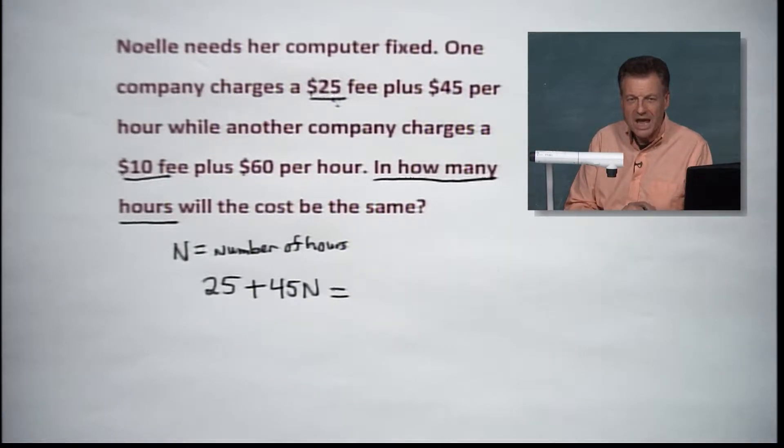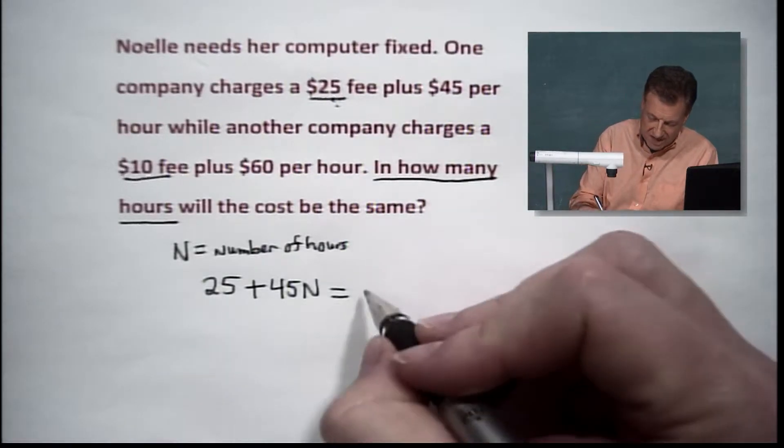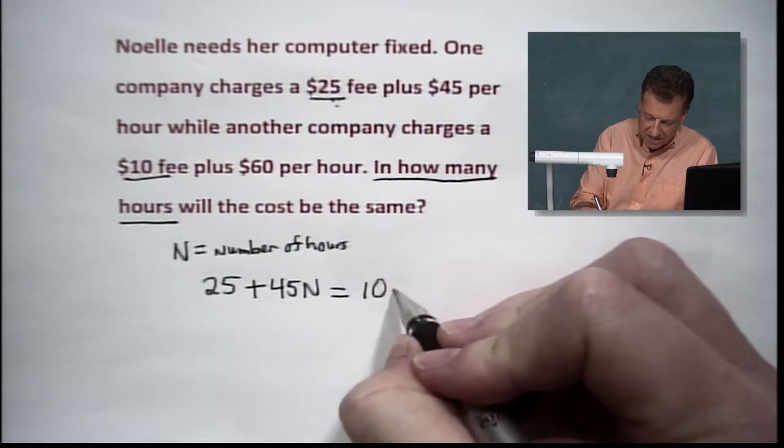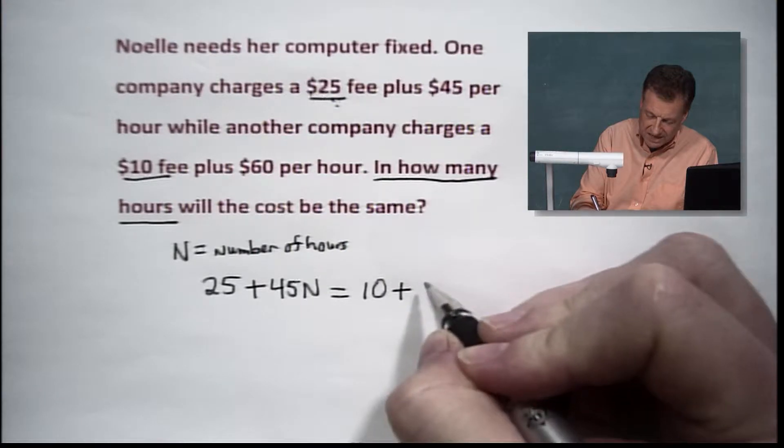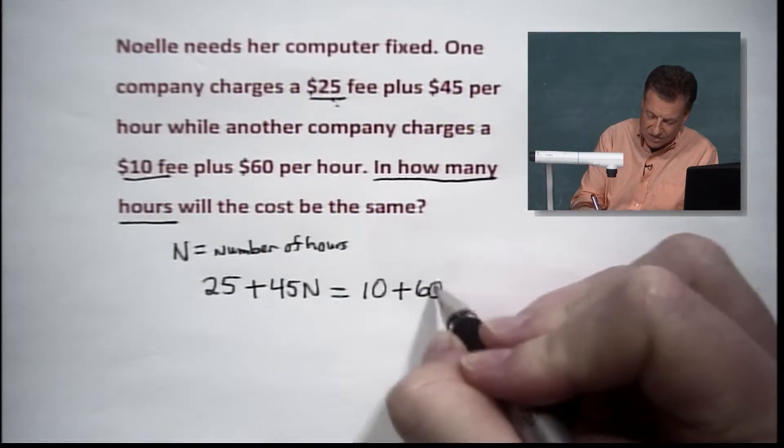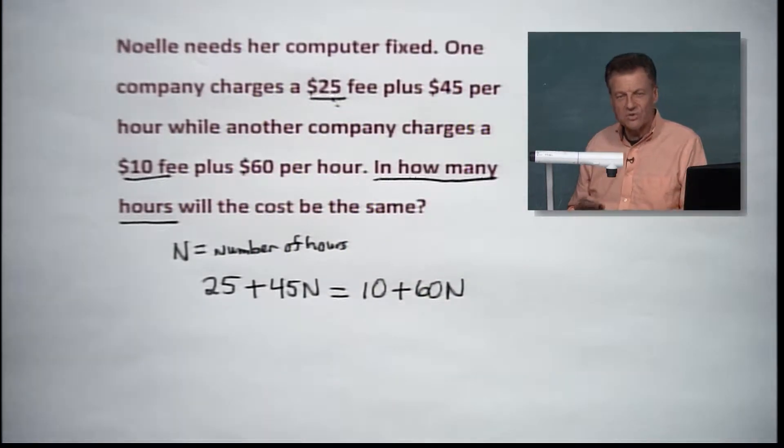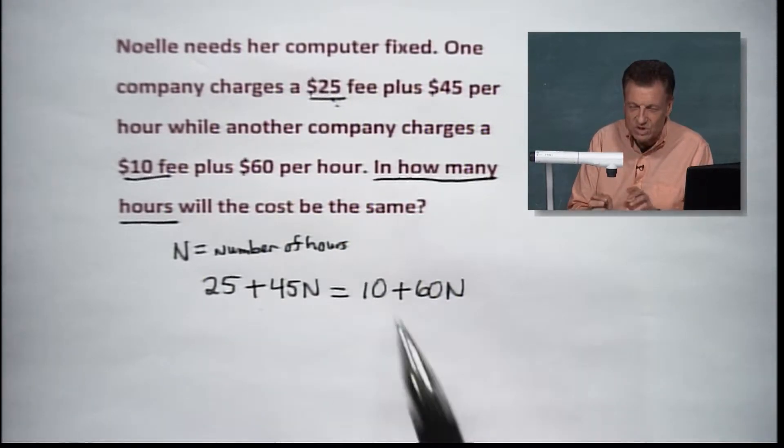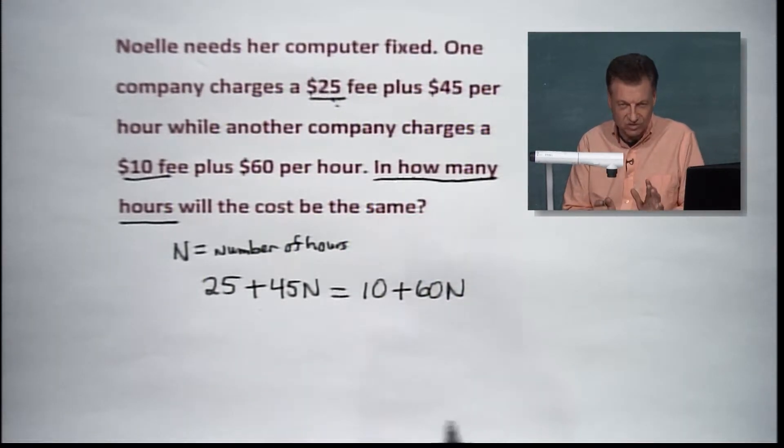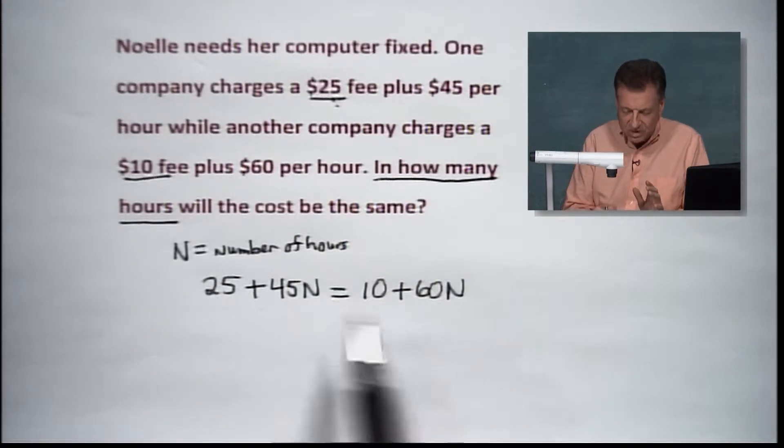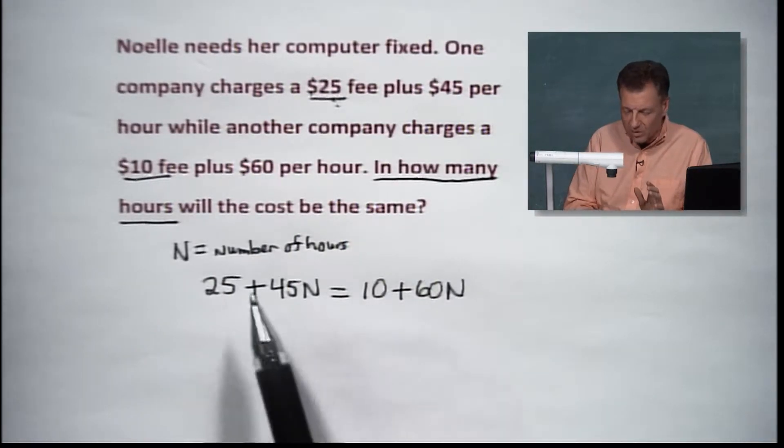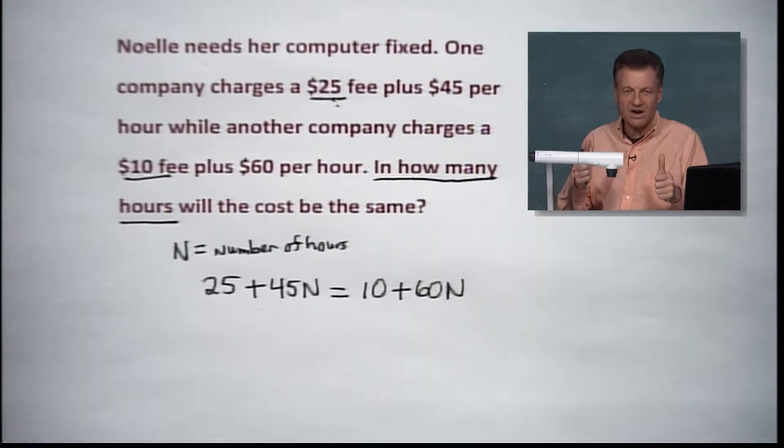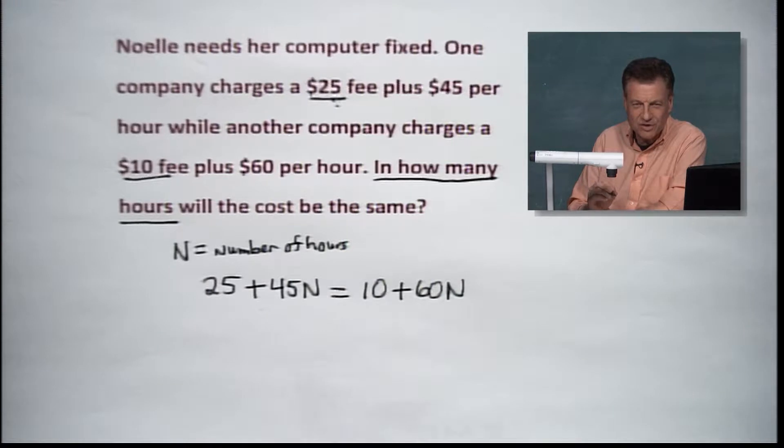Now, keep moving with me here. The other side says another company is going to charge a $10 fee plus $60 an hour this time. So notice I put an equals here. Why? Because we're trying to figure out where are they going to be the same. In other words, when are those amounts going to equal? The time is going to be equal also at that point, but we want to know when does the money break even there. And then we'll talk about which one's the smarter thing for her to do.